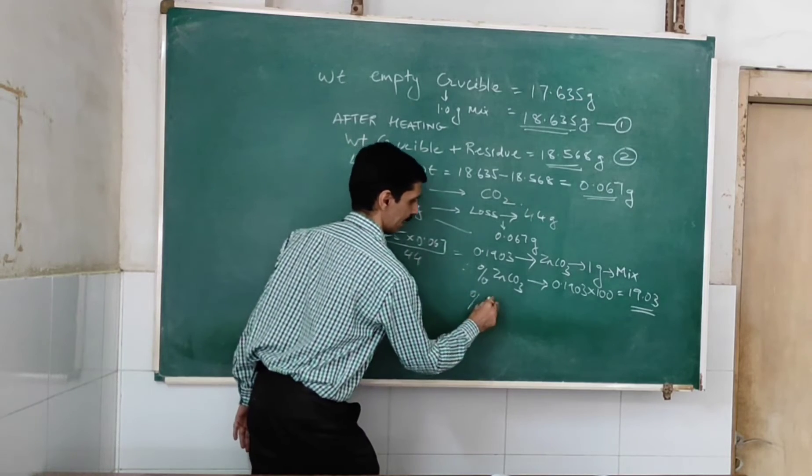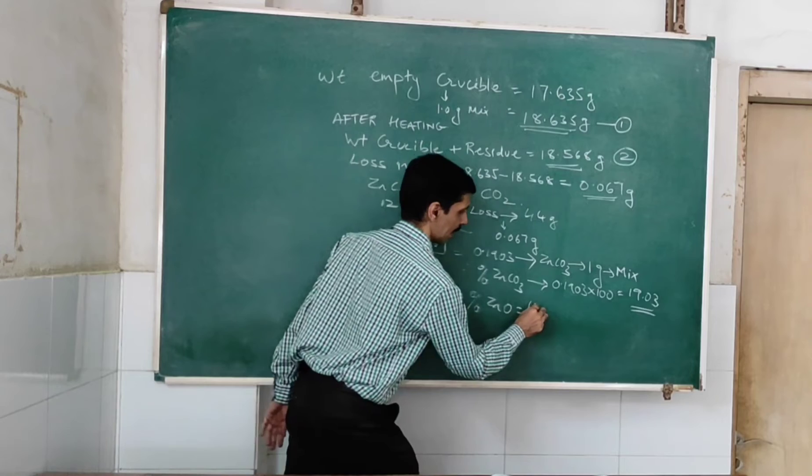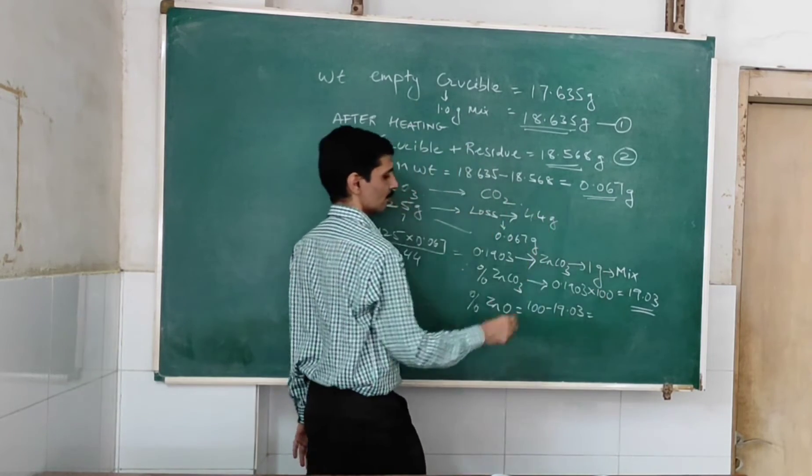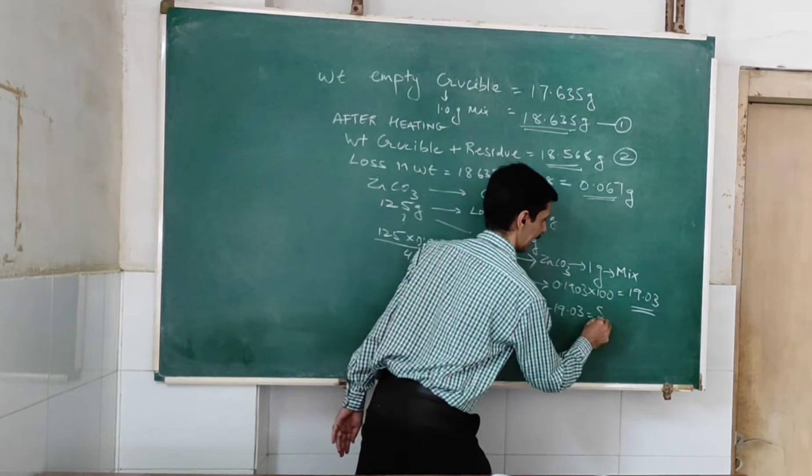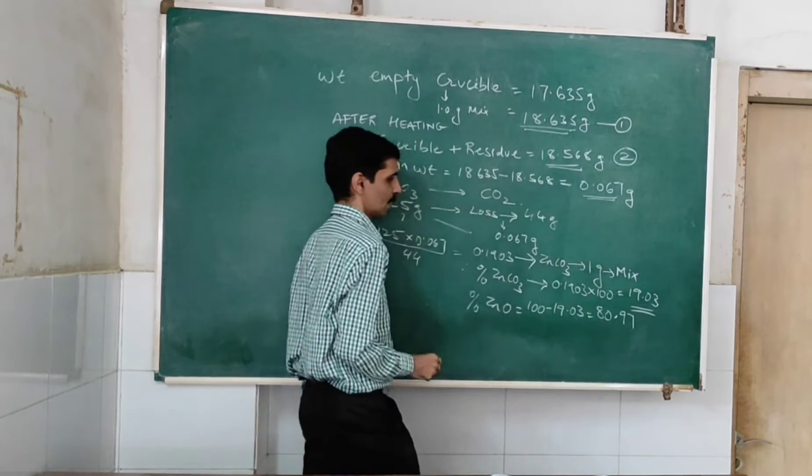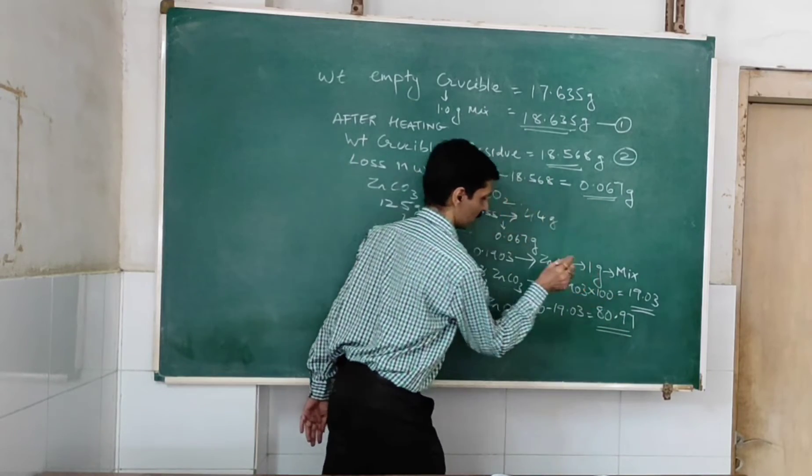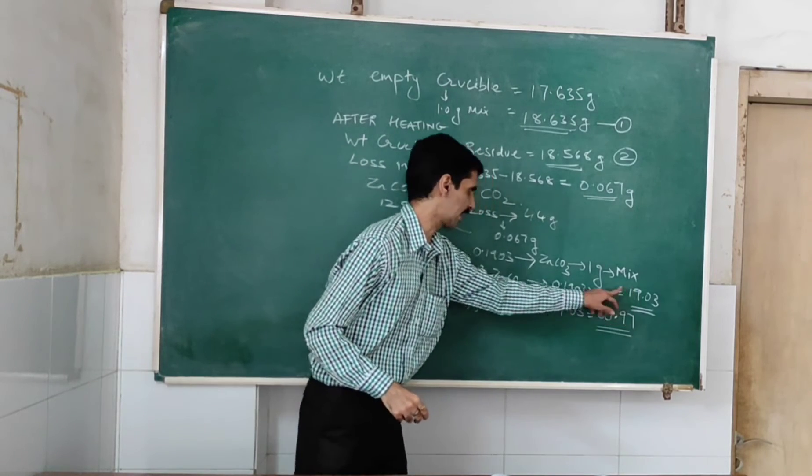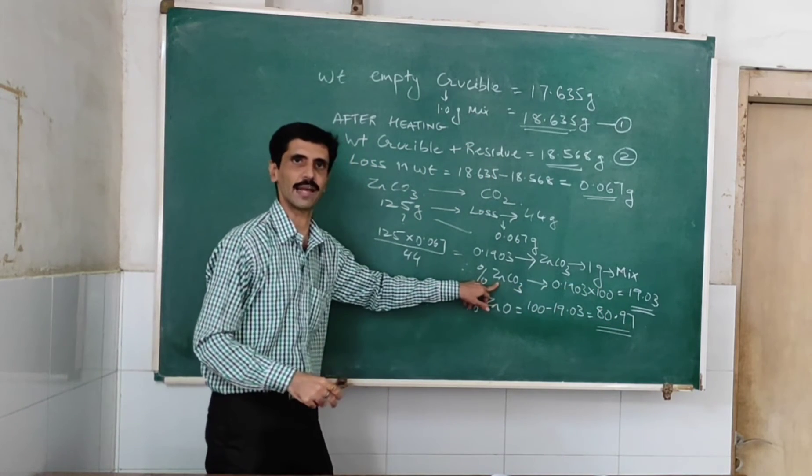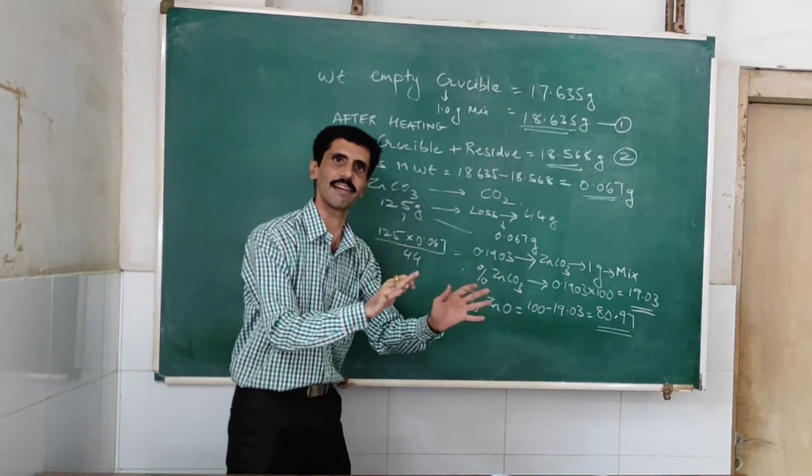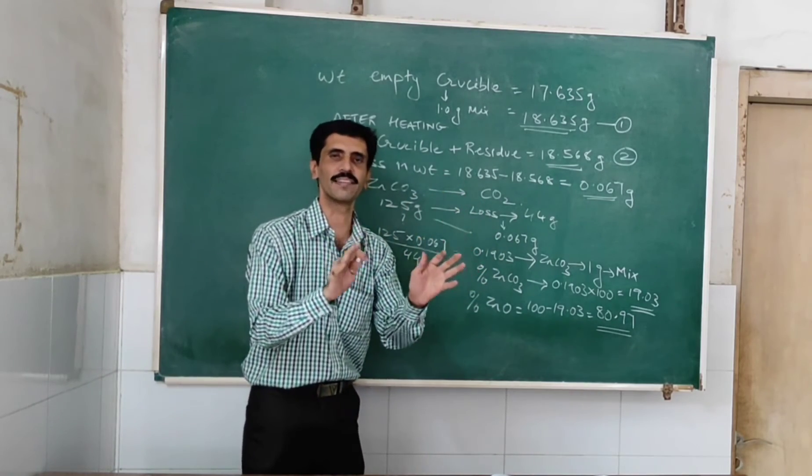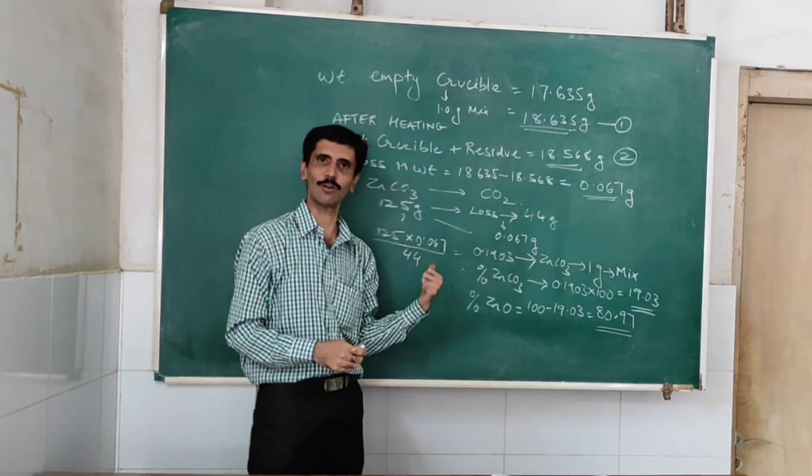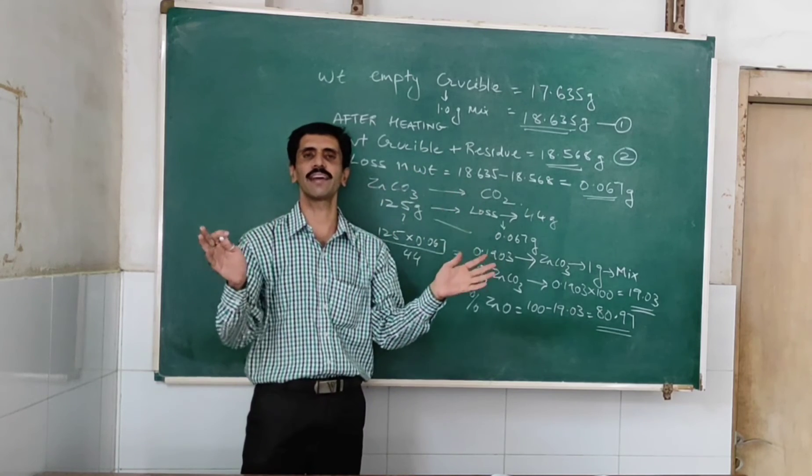So therefore, the percentage of zinc oxide will be 100 minus 19.03. So that comes out to be 80.97. So this will be the percentage purity of zinc oxide. It is 80.97. 19.03 is the zinc carbonate which can be considered as an impurity. Because impurities generally are in lower percentage, lower proportion. So I hope you have understood this calculation and you have understood the experiment as a whole.